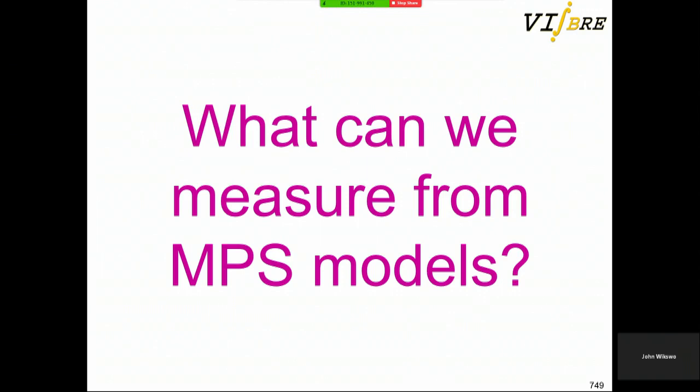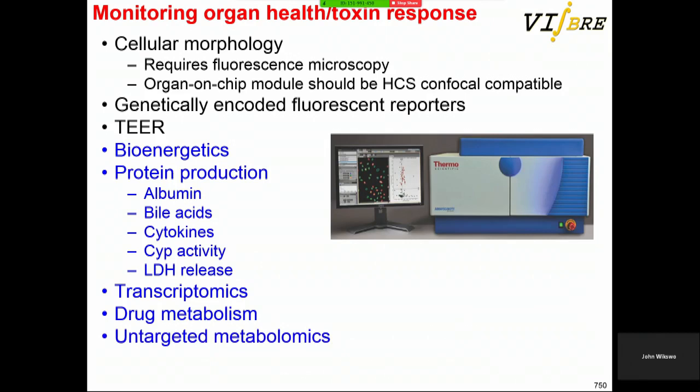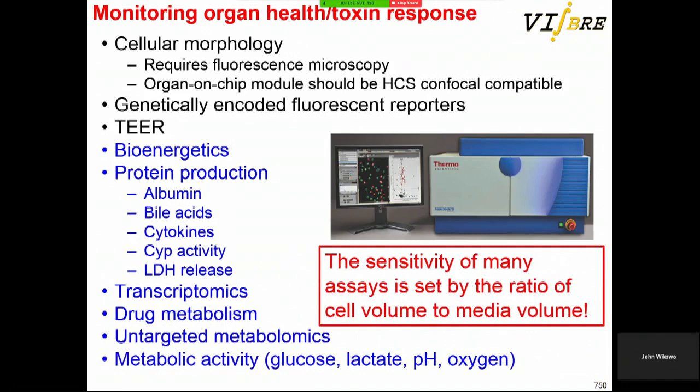What can you measure from these models? Megan gave a good list; we have a few more to add. Obviously cellular morphology, protein production, live transcriptomics, drug metabolism, and targeted metabolomics. The key thing is that sensitivity of the assay is set by the ratio of cell volume to media volume — so we're back to the volume problem.